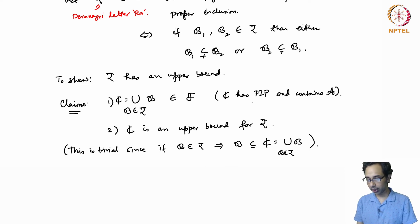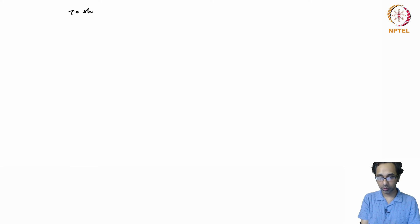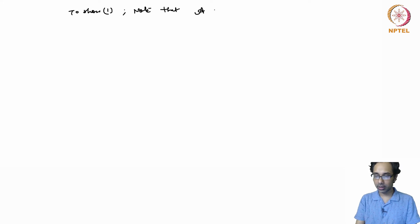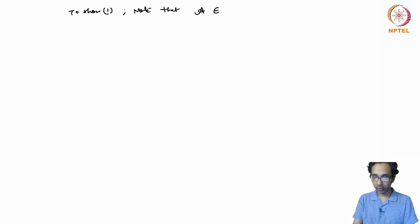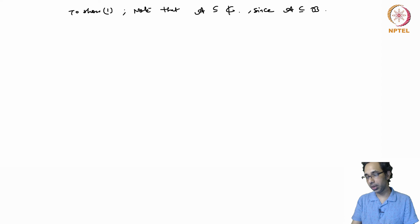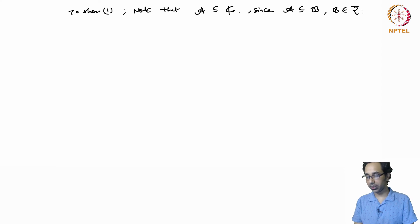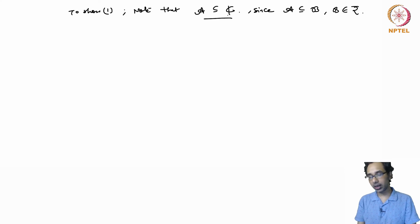To show the first claim, note that A is a sub-collection of C since A is a sub-collection of each collection B for every B in ρ. Therefore A is contained in C, and it now suffices to show that C has the finite intersection property.